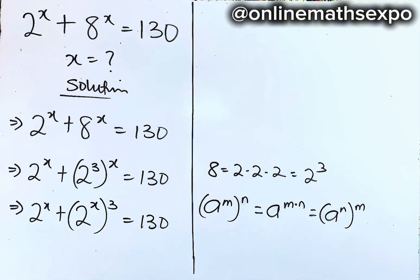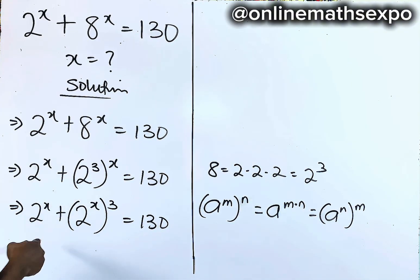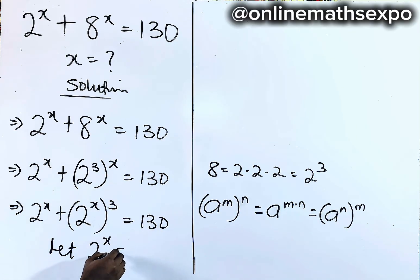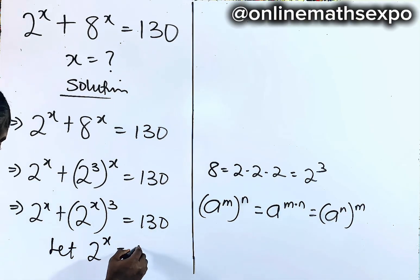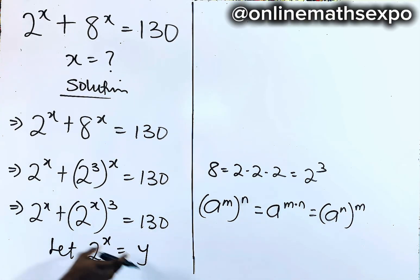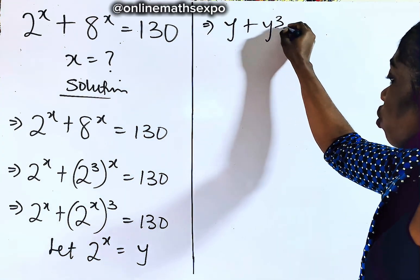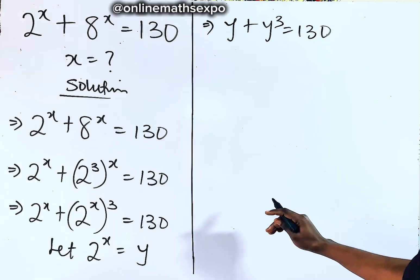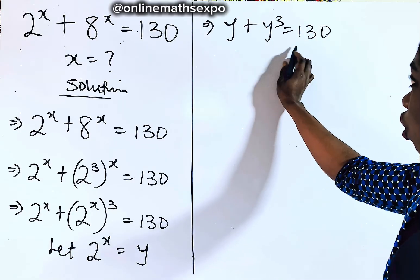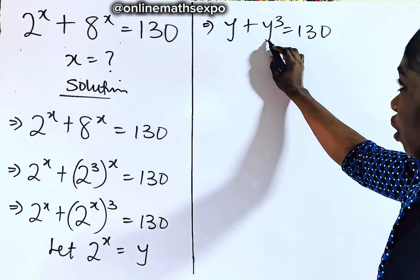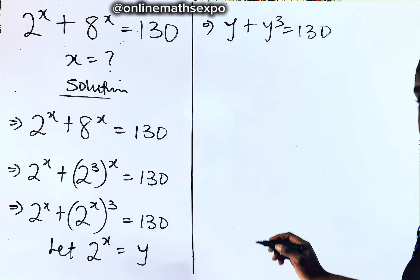Did you observe anything? You notice that 2 to the power of x is repeated. So we can let y replace 2 to the power of x — use any variable of your choice. Substituting, we have y plus y cubed is equal to 130. This is a cubic equation because the highest power of y is 3.